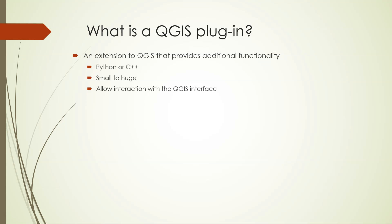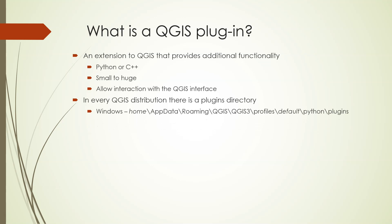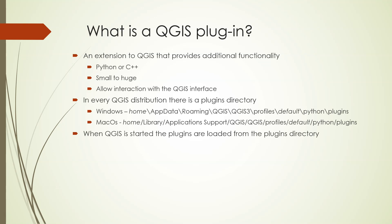QGIS also has a plugin manager that makes it very easy to find and install new plugins in a variety of ways. In every distribution, there is a plugins directory. In Windows, it's located at the following location, starting from the user's home directory. If you have custom user profiles set up, then you need to change the location from the default profile to get the plugin directory specific for that user profile. On macOS, the plugins directory is at this location, and the same caveat about custom profiles applies. When you start QGIS, the program checks this plugins directory and loads any plugin that it finds there.